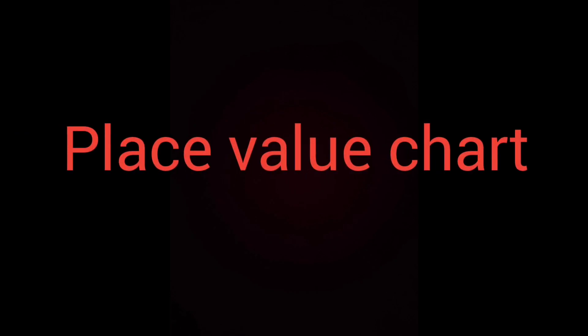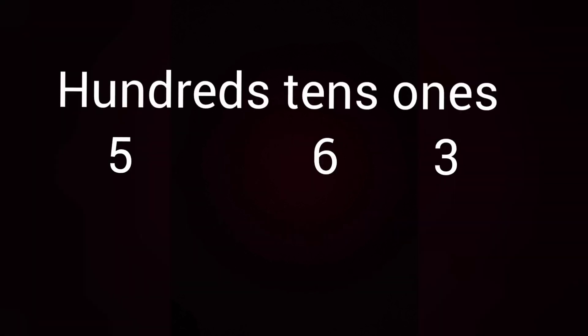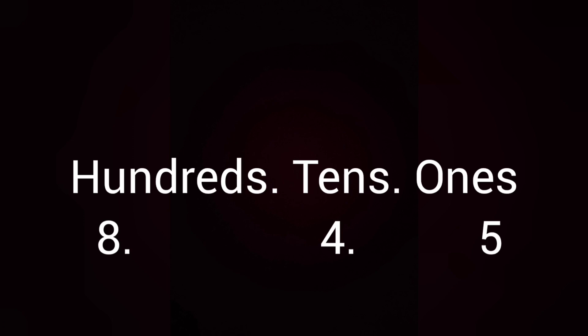Next, let us learn to write numbers in a place value chart. Example: 563. To write in the place value chart, we will start from the 1s place and we should never start writing from the left-hand side, that means from the greatest value. We should always start from the smallest value. So we will write 3 under the 1s column, 6 under the 10s column, and 5 under the 100s column. Next example: 845. We will write 5 under the 1s column, 4 under the 10s column, and 8 under the 100s column.